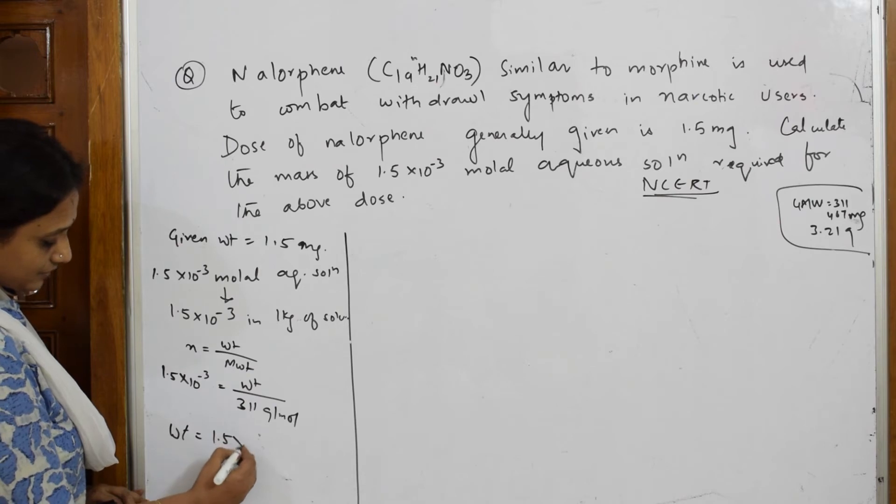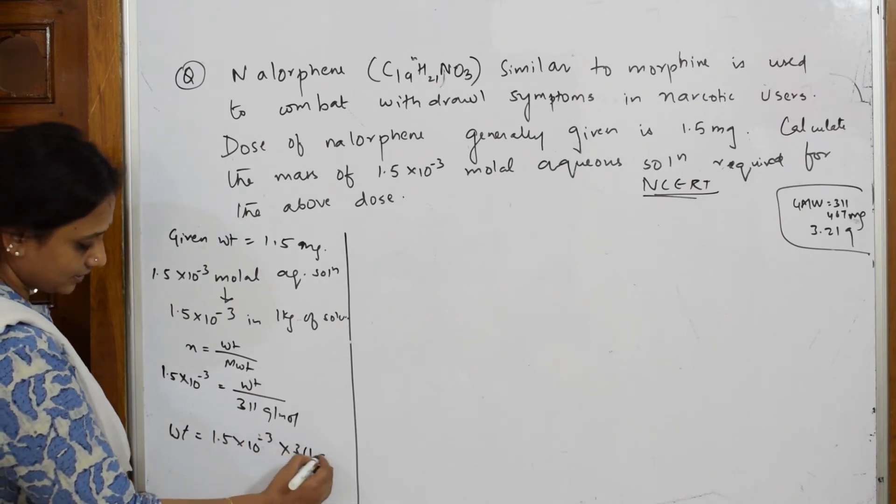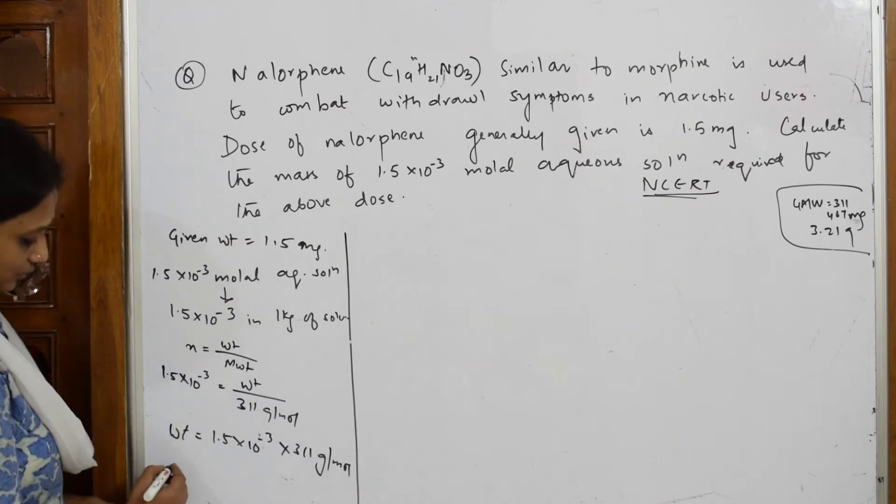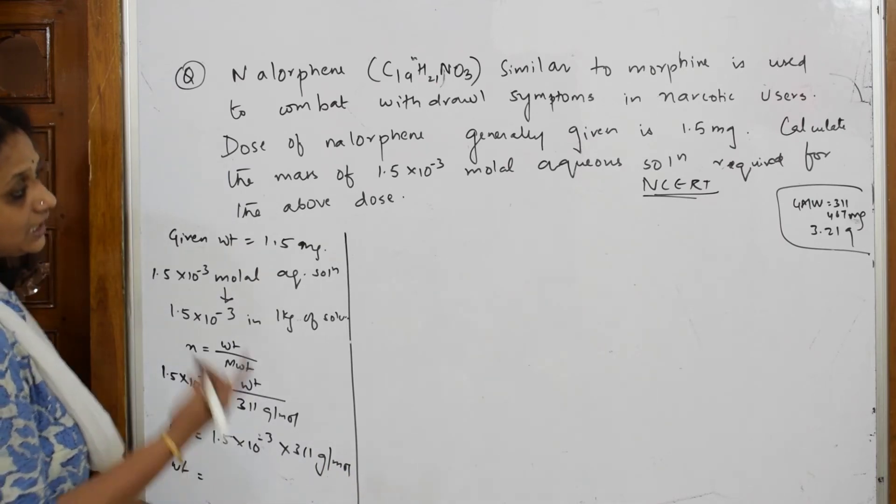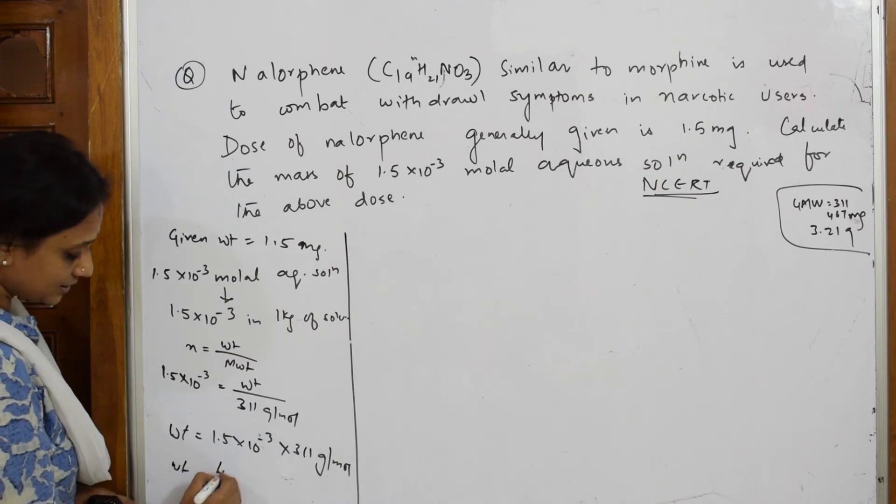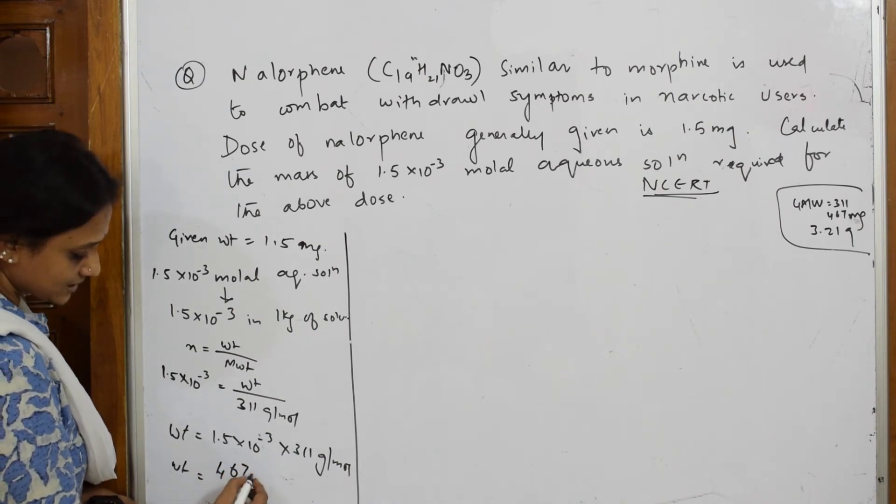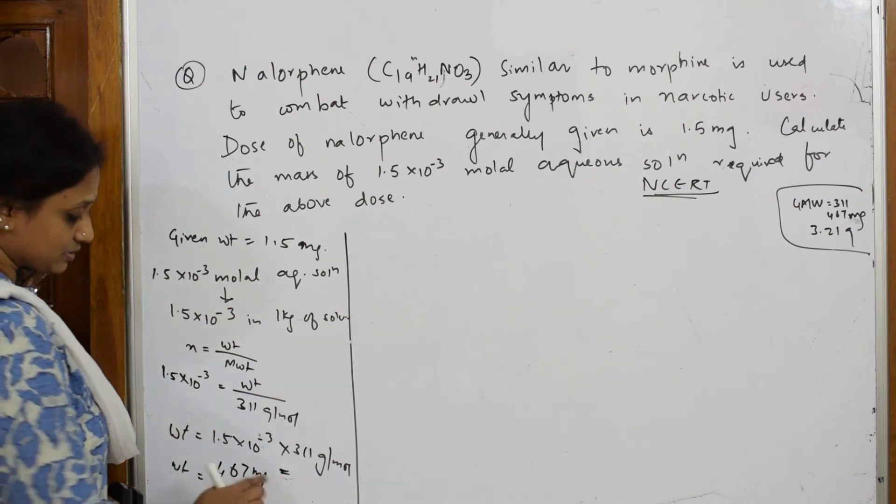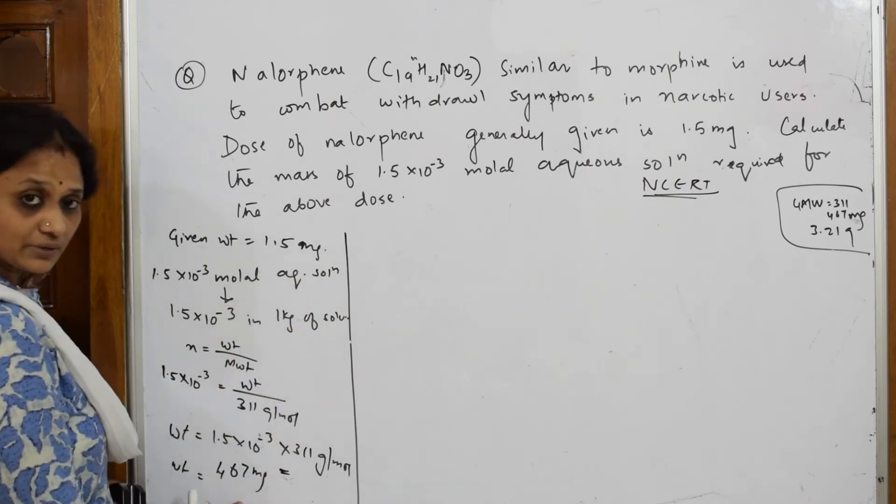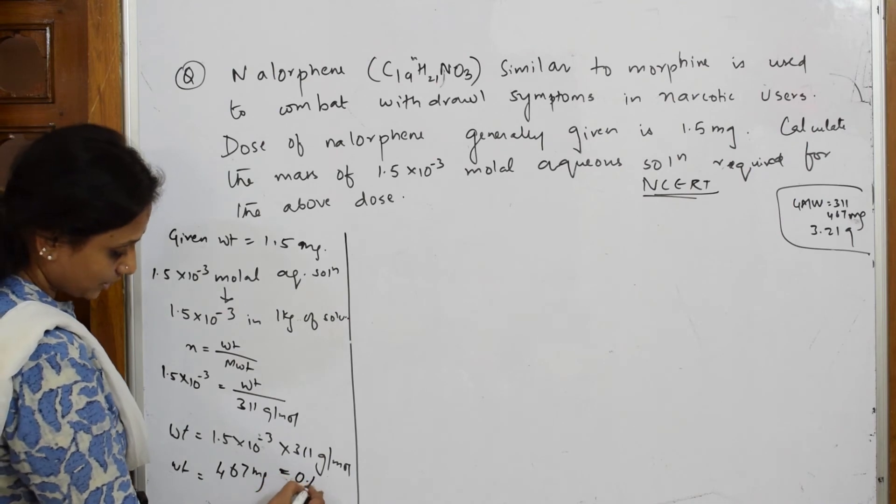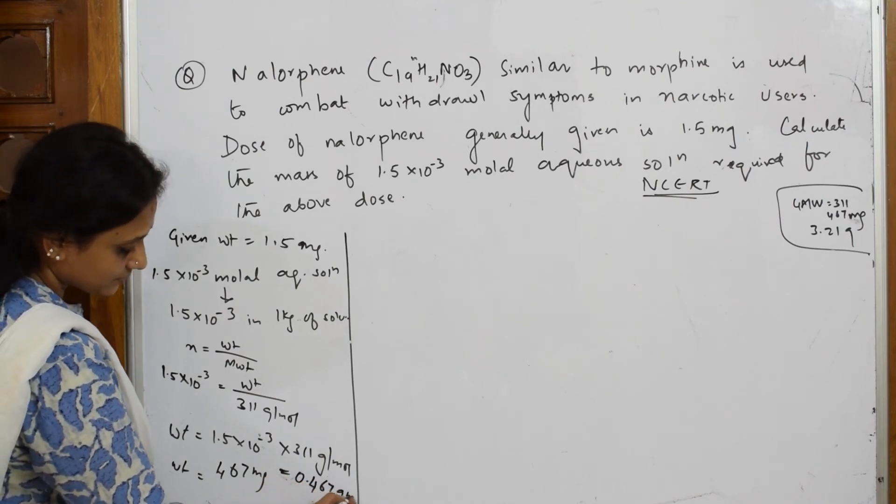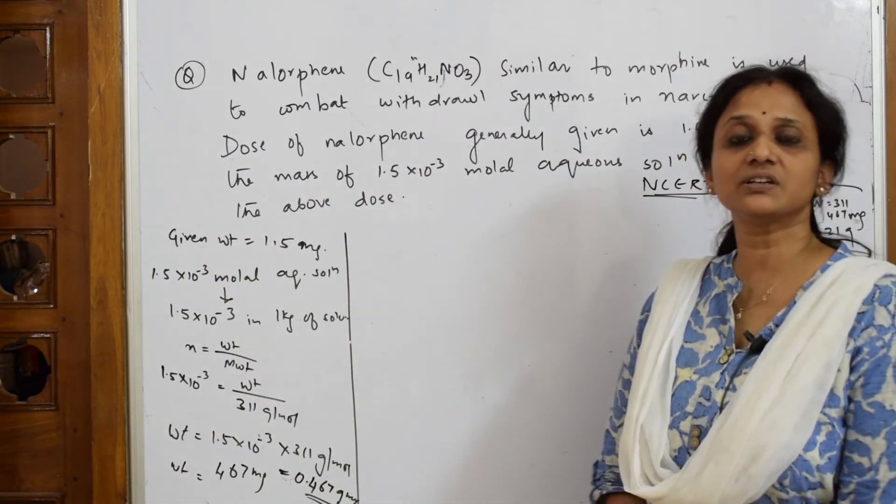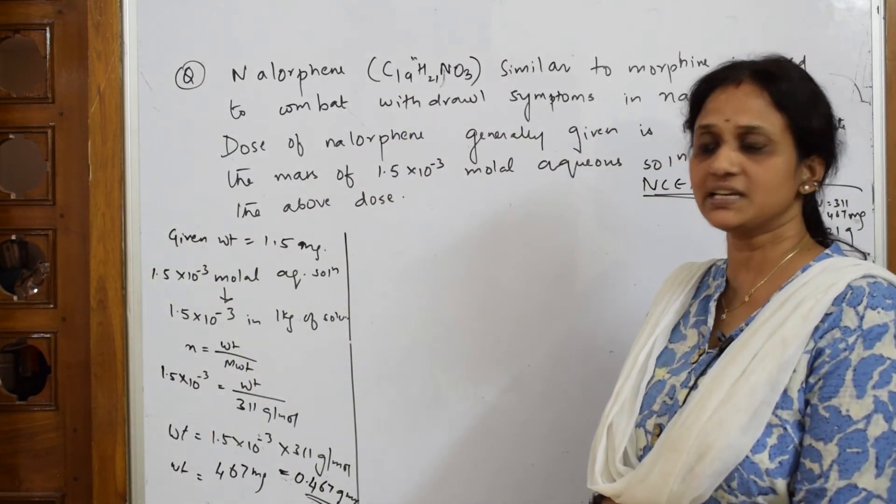1.5×10^-3 equals weight divided by 311 grams per mole. So weight equals 1.5×10^-3 × 311 grams per mole. I get 467 milligrams. If I convert into grams, this becomes 0.467 grams.